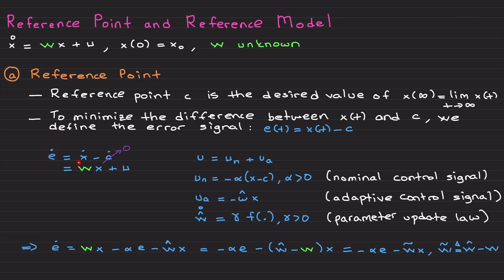I would like to establish dynamics for the error. Computing e_dot: e_dot equals x_dot minus c_dot, and since c is zero (constant), e_dot becomes x_dot, which is wx plus u. Reference point and reference model become very important for the command following problem — that's why we have command c, unlike previous videos where I considered the stabilization problem with x going to zero. We want x to converge to this reference point or command c.